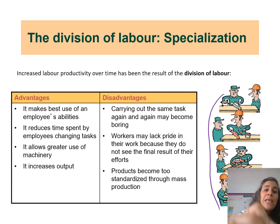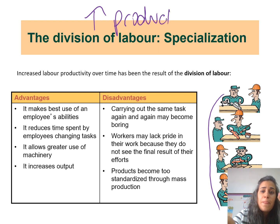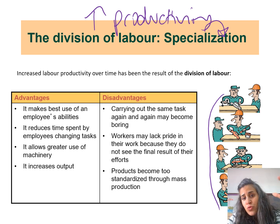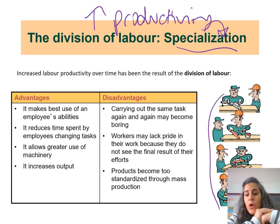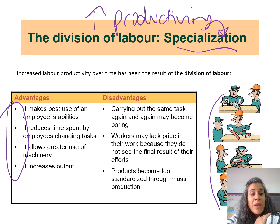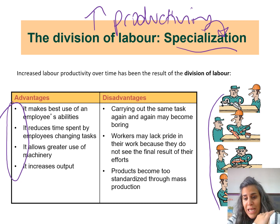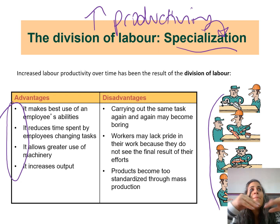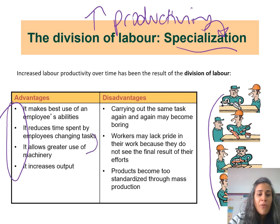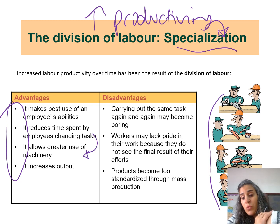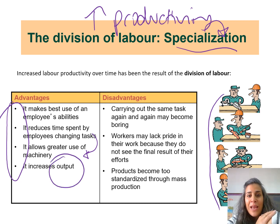Some firms increase productivity through specialization. The advantages are: it makes best use of an employee's abilities; it reduces time spent by employees changing tasks; and because workers are specialized and know what they're doing, they can use machines more effectively, which ultimately increases output or production.